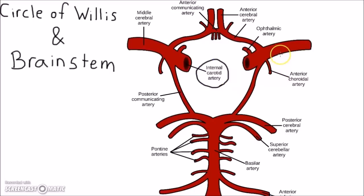The main blood supply comes from the internal carotid artery, which branches into the ophthalmic artery, the anterior choroidal artery, and the middle cerebral artery, all three of which are not part of the circle.